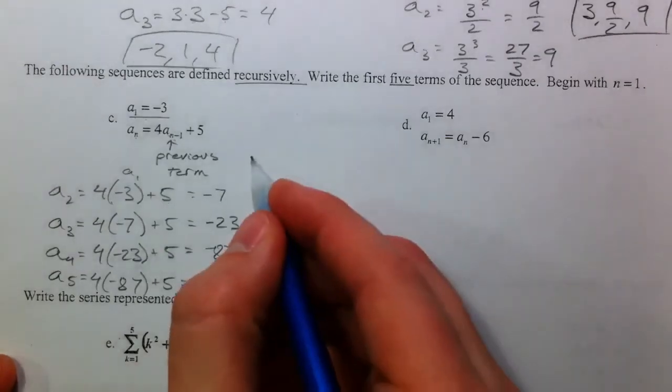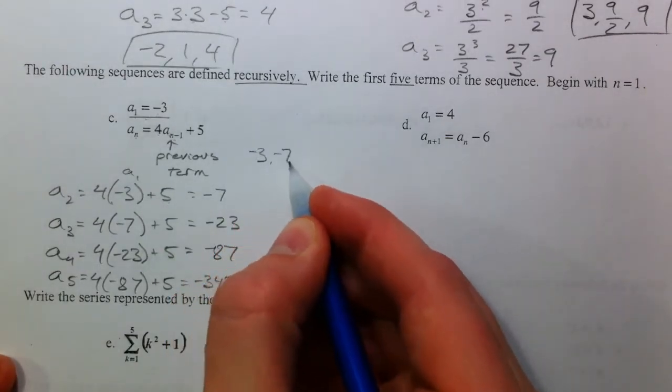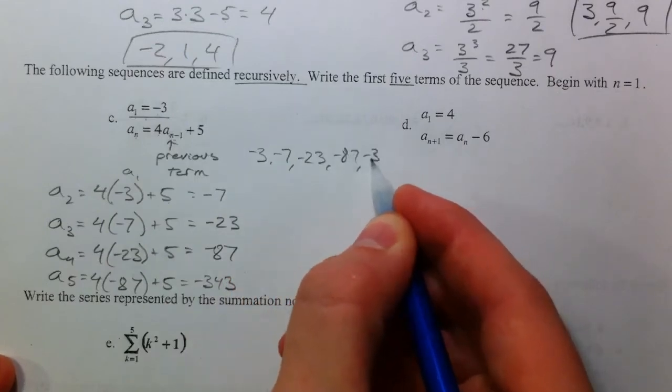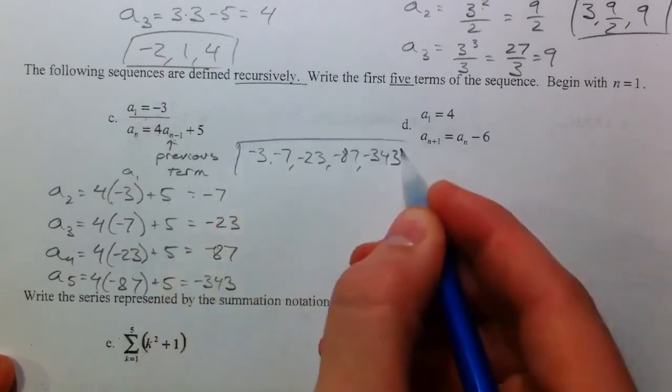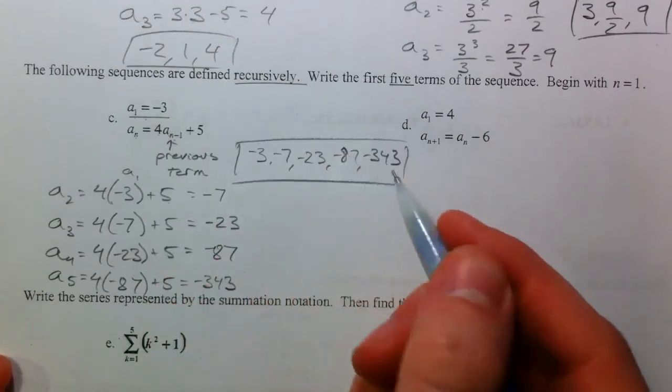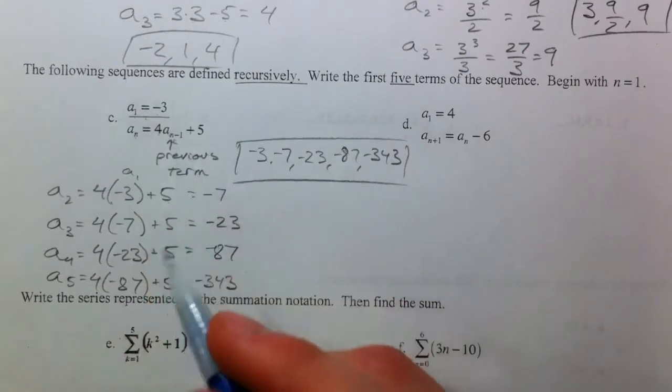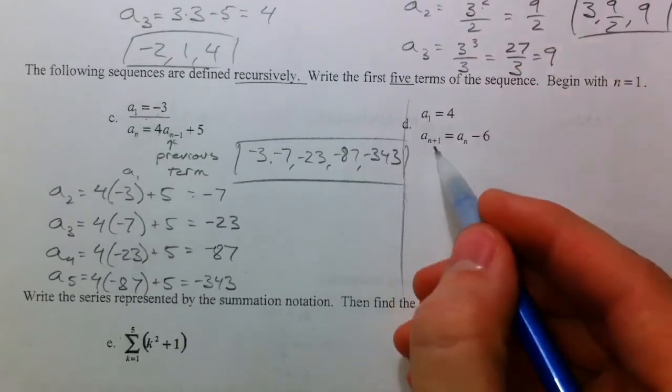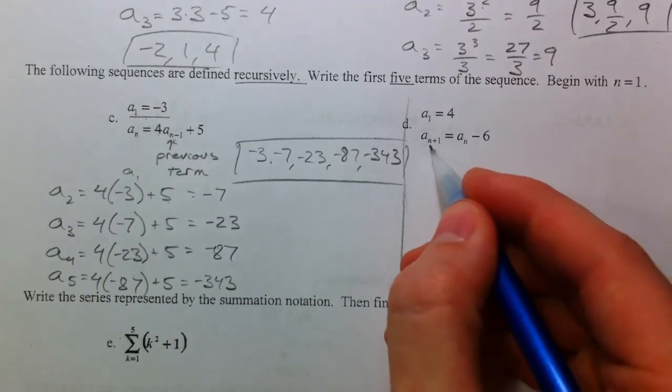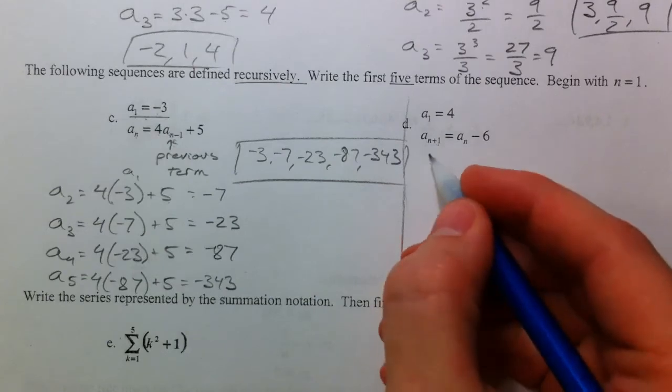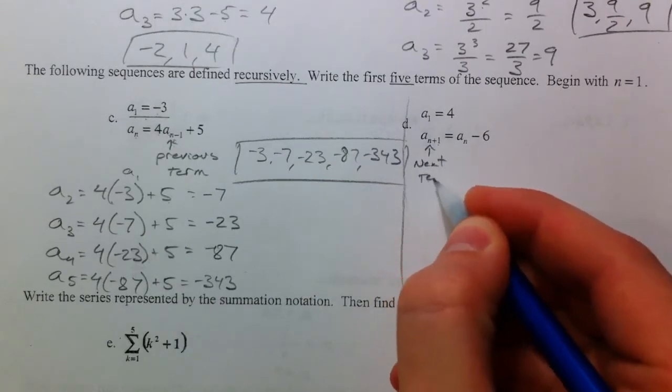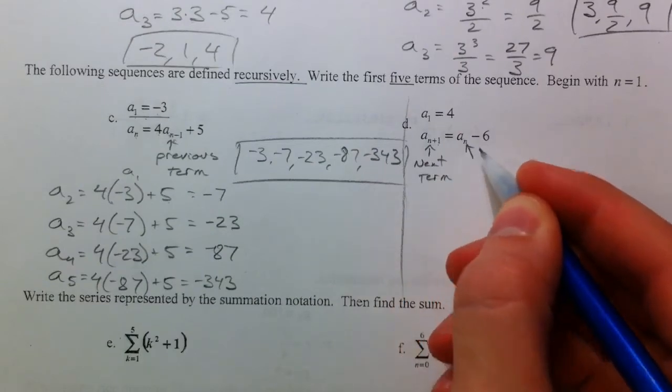So our first five terms, negative 3, negative 7, negative 23, negative 87, negative 343. Big key is recognizing that as the previous term. This one is very similar, except they define it as, to find a sub n plus 1, which is kind of like the next term, you need the current term.